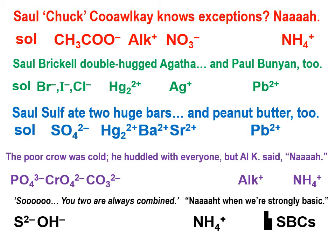Lastly: 'So, you two are always combined, not when we're strongly basic.' The 'so' part refers to the sulfide ion and the hydroxide ion. This mnemonic suggests that these two ions are always joined with other cations to form insoluble substances, unless those cations are the ammonium ion or the strong base cations — the alkali metals and the heaviest three alkaline earth elements: lithium, sodium, potassium, rubidium, cesium, calcium, strontium, and barium.